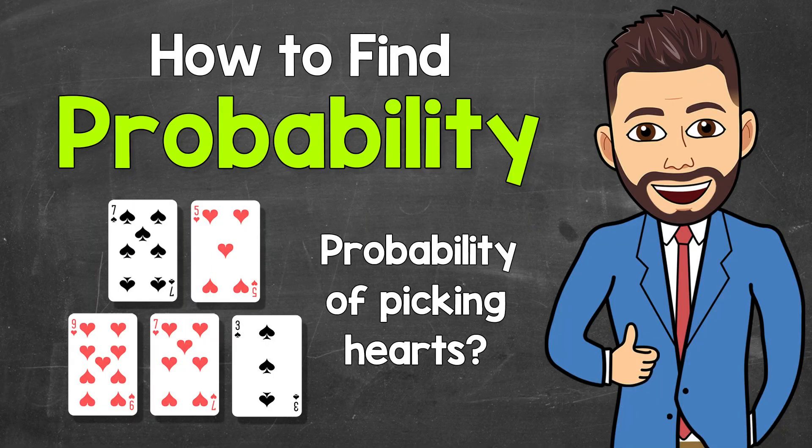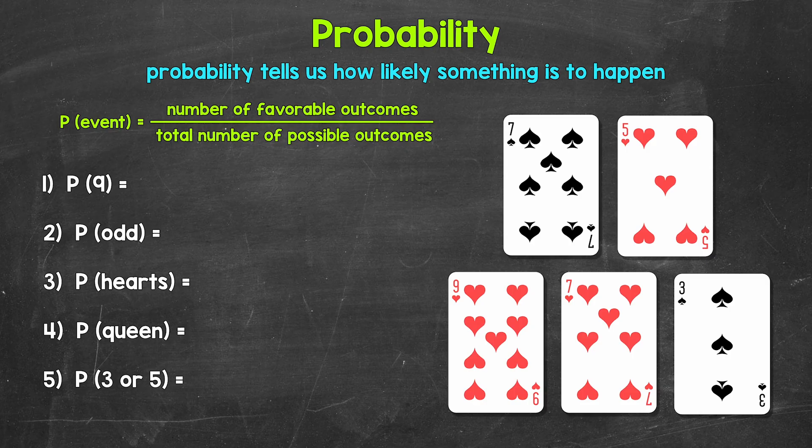Welcome to Math with Mr. J. In this video, I'm going to cover how to find probability. We will go through five basic probability examples using playing cards. Now remember, probability tells us how likely something is to happen — in other words, the chance of something happening.